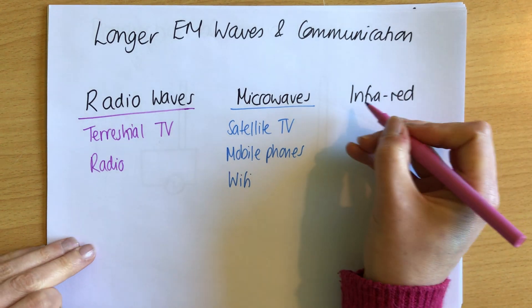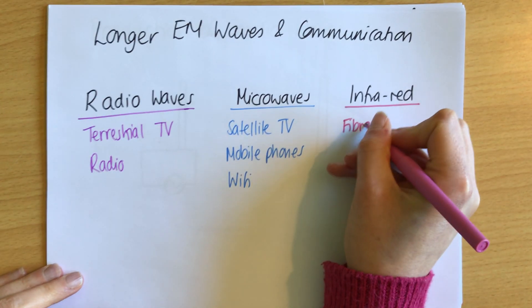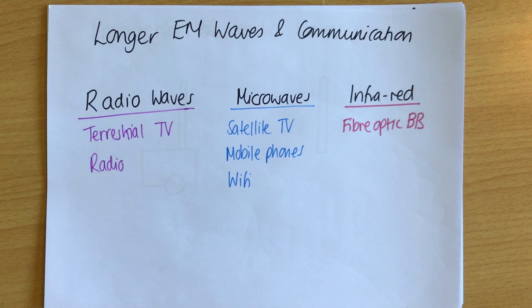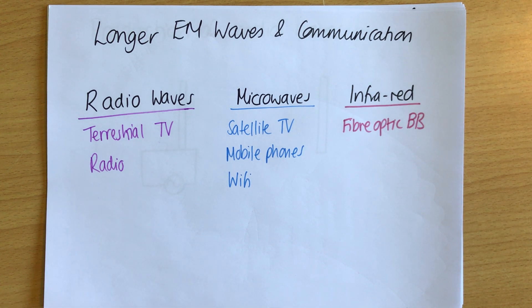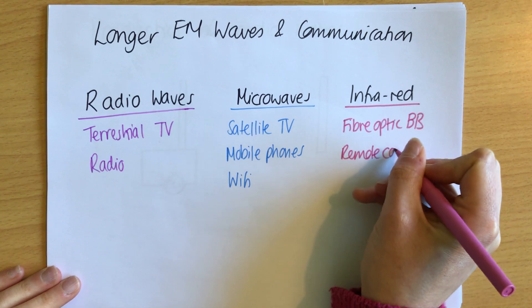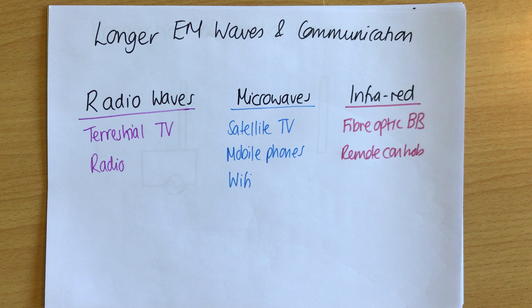Finally we've got infrared, which is less often used for communications, but there are still some uses. The major one is probably fibre optic broadband — if you've got fibre optic broadband, it's being carried by infrared signals through fibre optics. Fibre optics can use either infrared or visible light; these generally use infrared. Another use is remote controls, which often have a little red light on the end — that's red light, not infrared — but the infrared signal is what actually carries the information to change the channel.